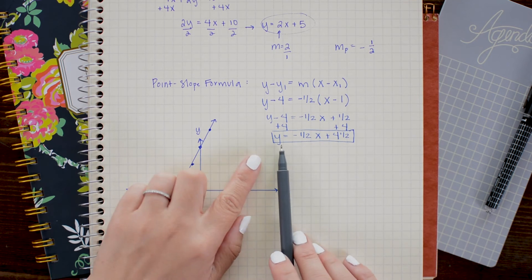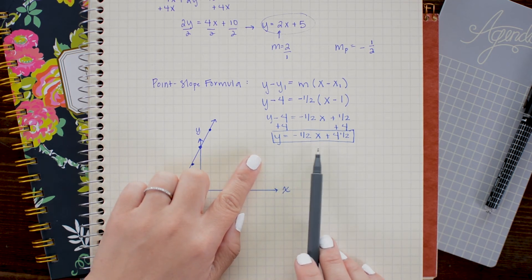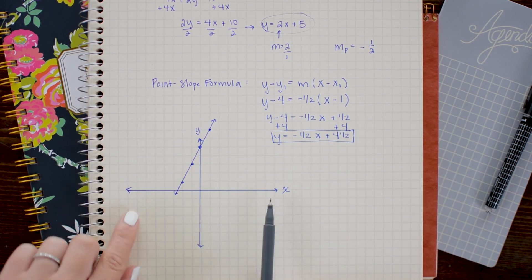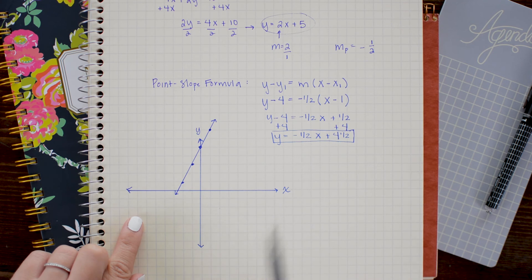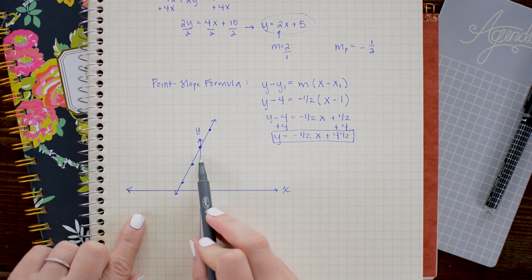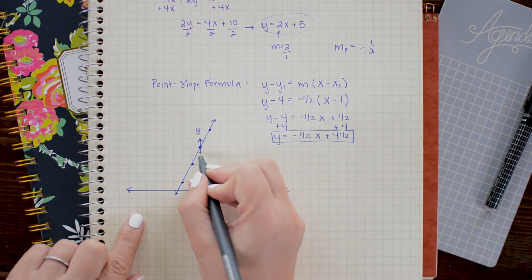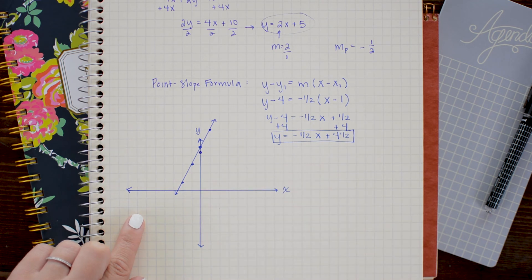Lastly, we're just going to add the graph of y equals negative one-half x plus four-and-a-half onto our coordinate plane. So I'm going to start by marking the y-intercept, which is at four-and-a-half. So I'm just going to go up 1, 2, 3, 4, and I'm just going to go halfway and mark it.